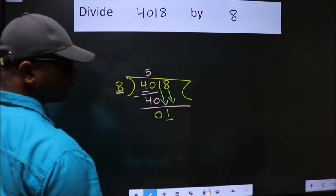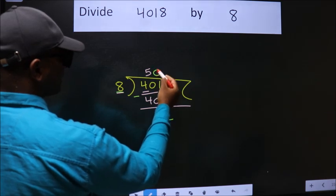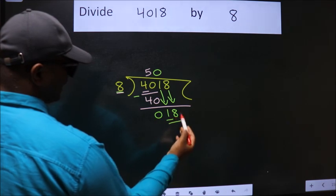And the rule to bring down the second number is put 0 here. Then only we can bring down this number. So 18.